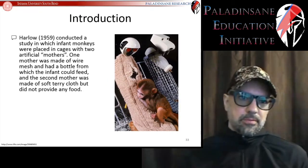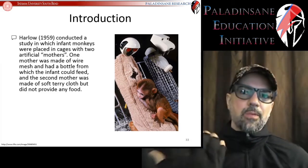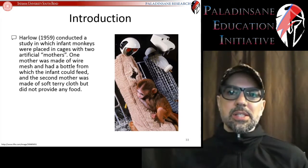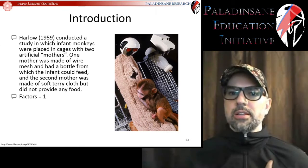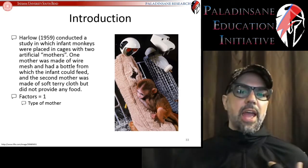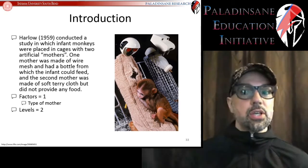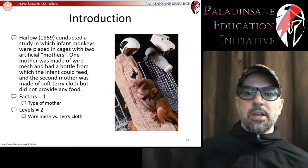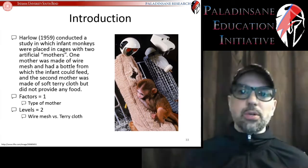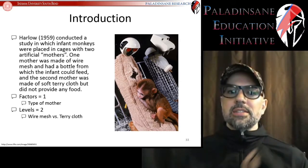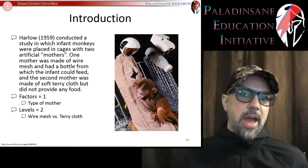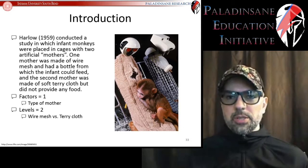Let's put some context on this with examples. In the Harlow infant monkey study, monkeys were placed in cages with two artificial mothers — one soft terry cloth and one wire mesh with a feeding bottle. There was one factor: type of mother. And two levels: wire mesh versus terry cloth. If they had added a third type — say, a water balloon mother — that would be three levels. One factor, two levels means a t-test is appropriate.